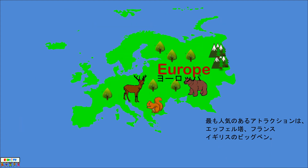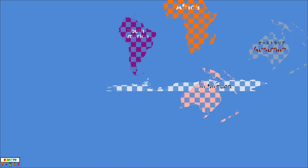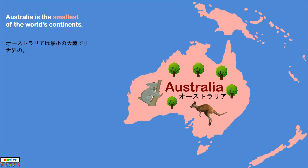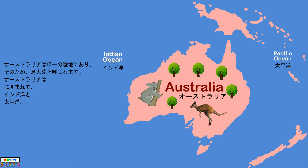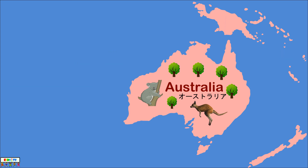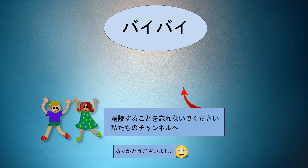Australia is the smallest of the world's continents. As Australia is mostly on a single land mass, it is also referred to as an island continent. It is surrounded by the Indian Ocean and the Pacific Ocean. The most popular attractions are the Opera House and the Twelve Apostles.